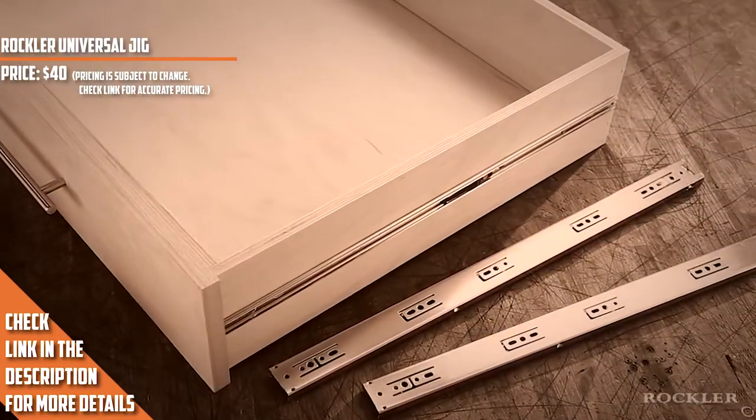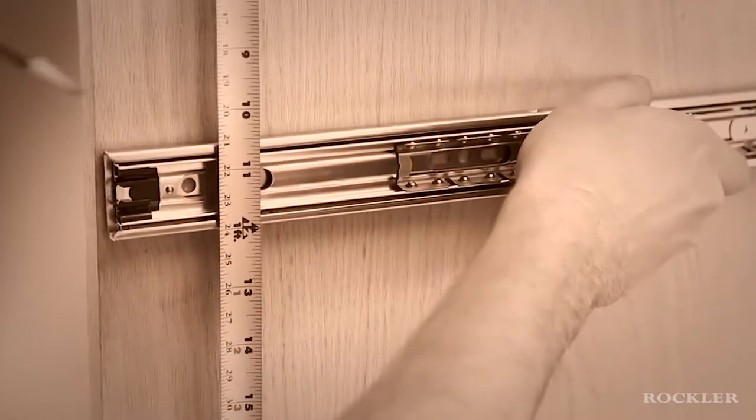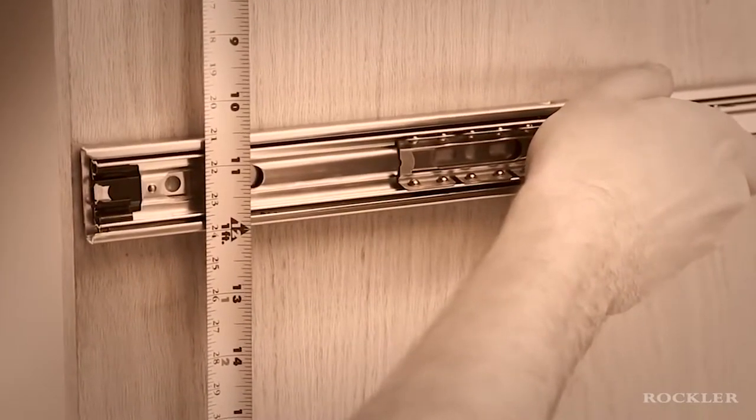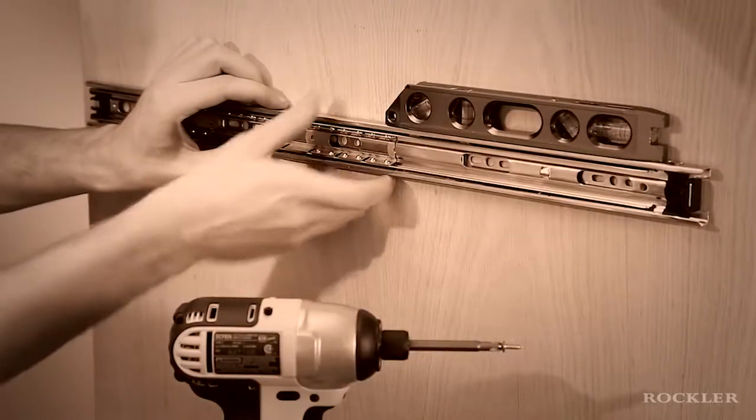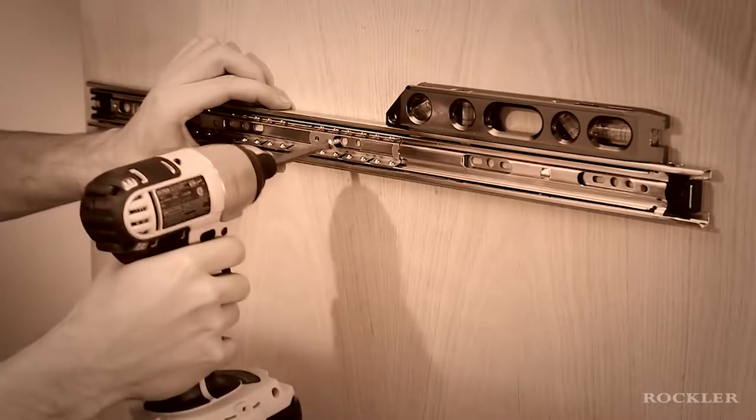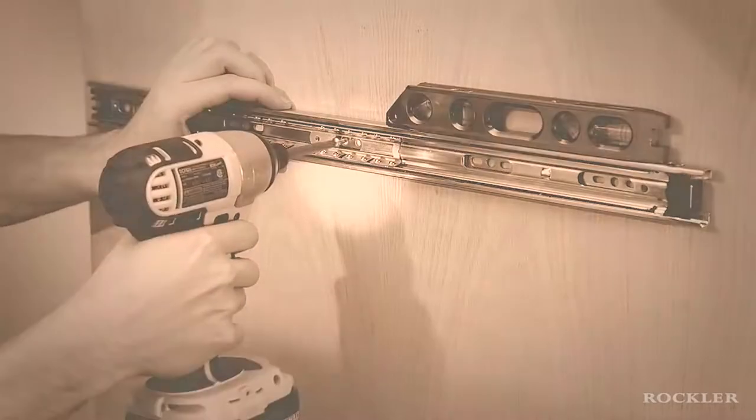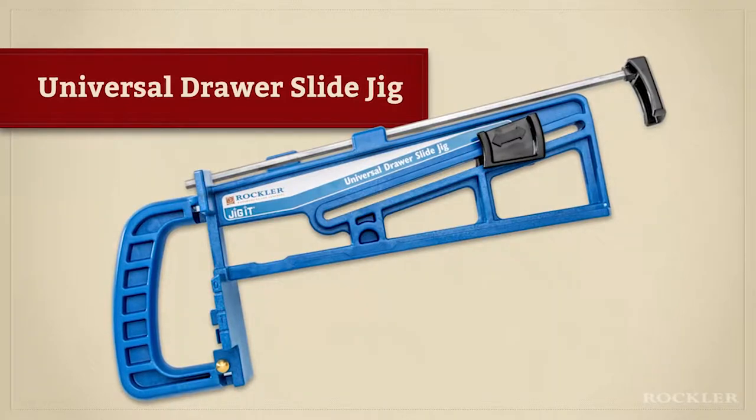If you've ever installed drawer slides you know it can be a challenge. You have to position the slide at exactly the right height with just the right setback and hold it perfectly level while you try to screw it to the cabinet. It's a fussy frustrating job, unless you have Rockler's new universal drawer slide jig.